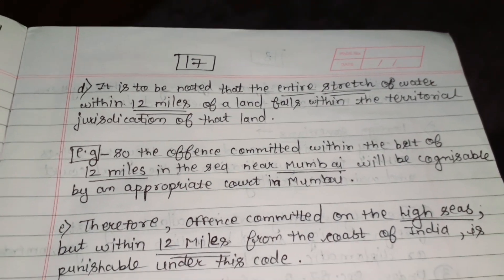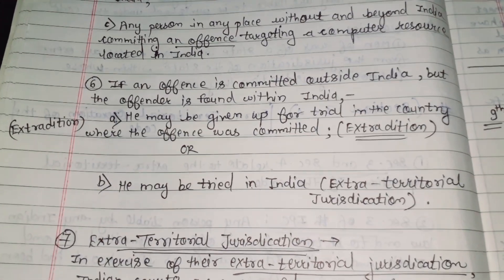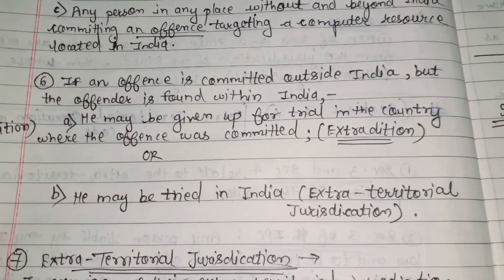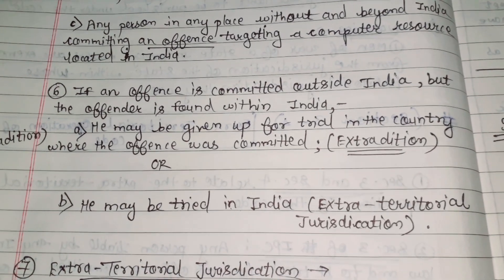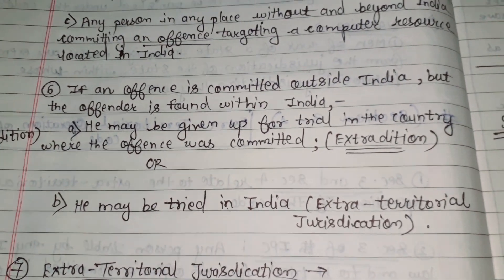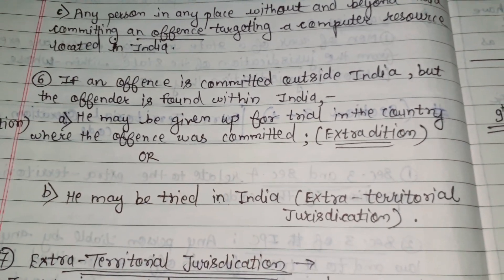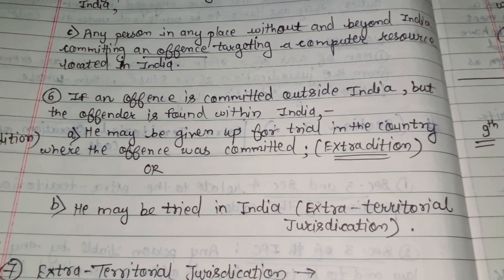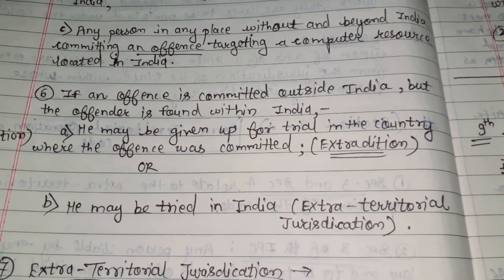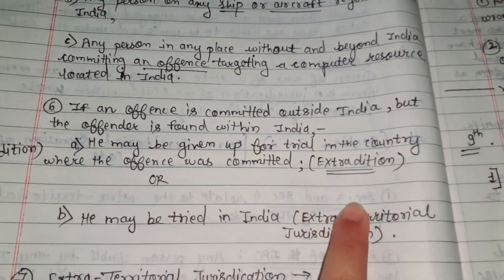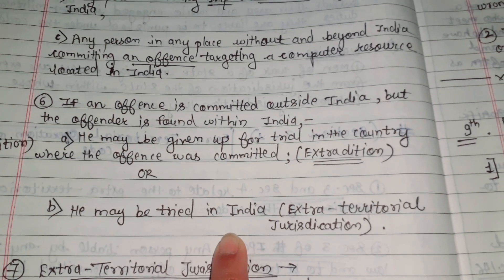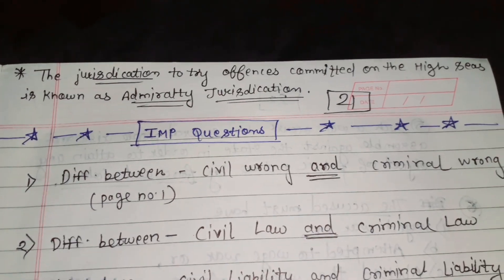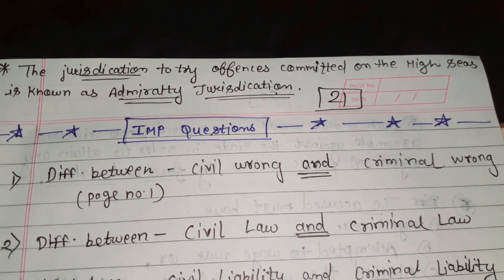Next is extradition. Extradition means if an offense is committed outside India but the offender is found within India, then he may be given up for trial in the country where the offense was committed — that offender will be sent to that country for trial. Alternatively, he may be tried in India, which is the extra-territorial jurisdiction.